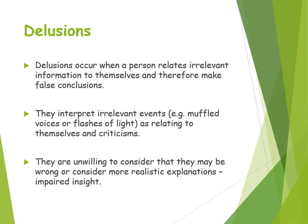The cognitive explanation believes delusions happen because the individual with schizophrenia relates irrelevant information to themselves and makes a false conclusion about it. They interpret irrelevant events — such as a muffled voice or flashes of light — as relating to themselves or as criticism of themselves, and they are unwilling to consider that they may be wrong or to look towards more realistic explanations. This is impaired insight: they aren't looking for alternatives and believe it does relate to themselves.